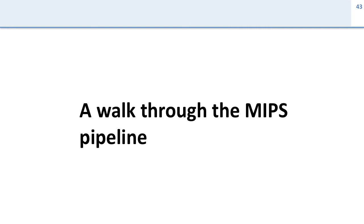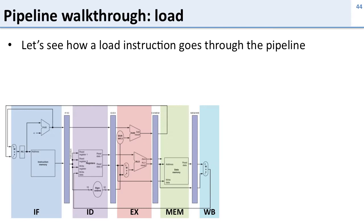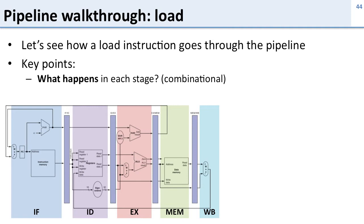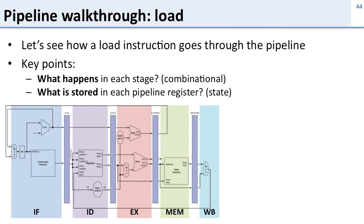Let's take a walk through the MIPS pipeline to see what all the stages do and how the instructions interact. We're going to look at a load instruction going through the pipeline, and there are two key things to pay attention to: first, what happens in each stage — what is the combinational pipeline logic doing? And second, what is stored in each pipeline register — that is, what is the state that we bring through the pipeline.